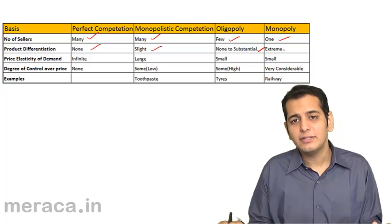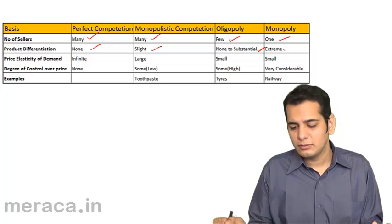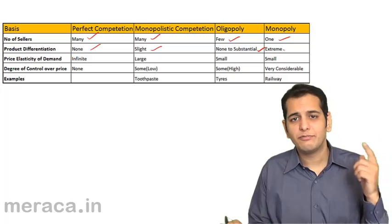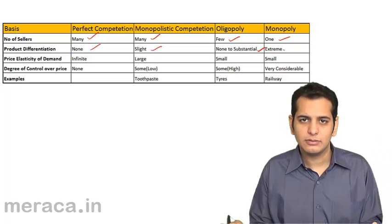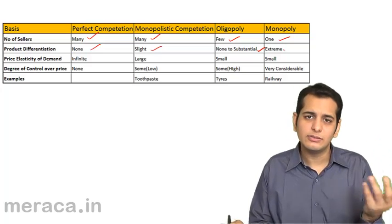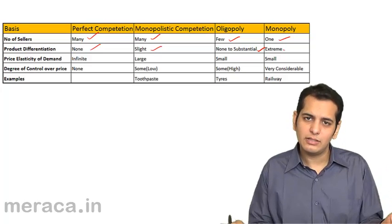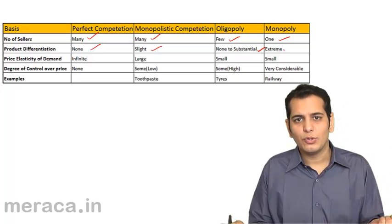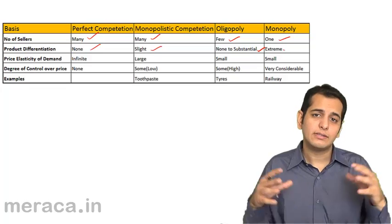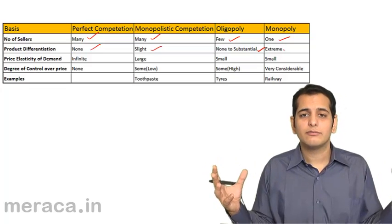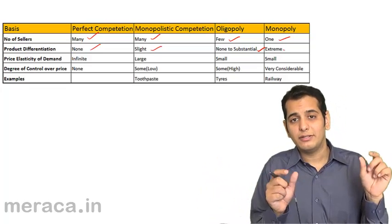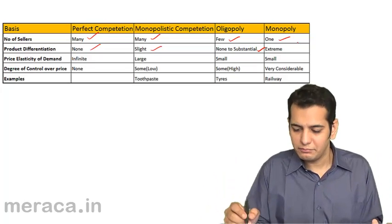In oligopoly, product differentiation may range from none to substantial. Finally in monopoly, since there is only one seller, the product differentiation is extreme — he'll sell one product or products which are different from each other.